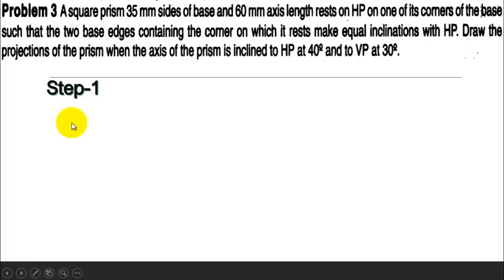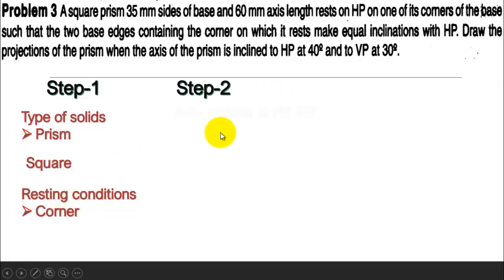Step 1: We identify the type of solid as a prism with square shape, and the resting condition is corner. Step 2: We take the axis inclination to HP, which is 40 degrees as given.